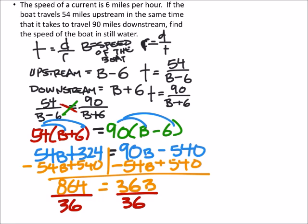We already defined the speed of the boat to be B. 864 divided by 36, I want to say it's 24, so 24 miles per hour.